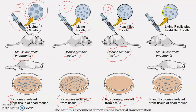In the fourth step, Frederick Griffith injected a mixture of living R-type bacteria and heat-killed S bacteria. One would expect no disease to develop, since living R bacteria cannot cause pneumonia and heat-killed bacteria are dead. But surprisingly, Griffith observed that pneumonia developed in that mouse and the mouse died. Finally, he isolated both R (living) and S colonies from the tissues of this dead mouse.